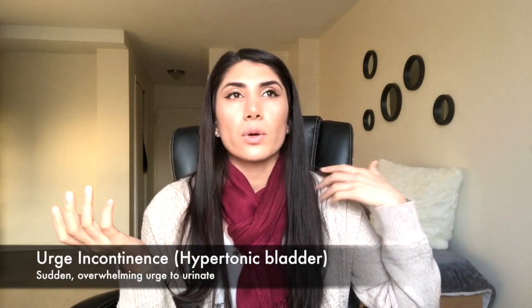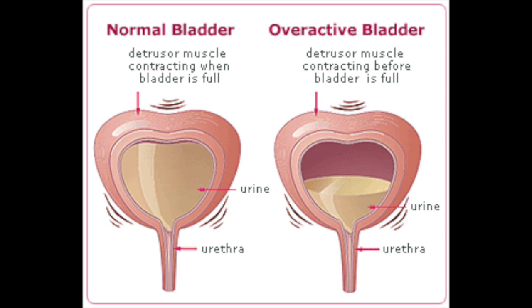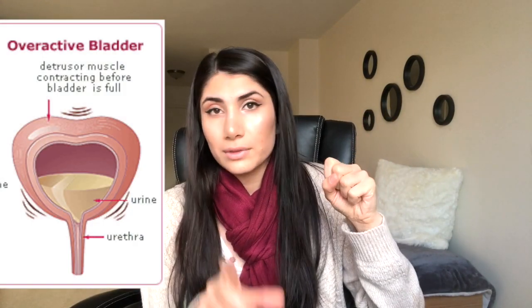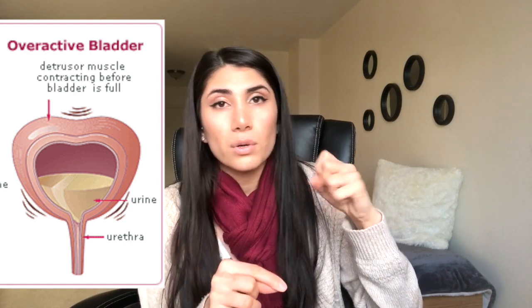Hypertonic bladder means you have a spastic bladder that's constantly being activated. Normally when you go to the bathroom, you relax the sphincter and then the bladder contracts. In urge incontinence, the contraction occurs on its own randomly — it just keeps happening. You can't hold it because the bladder contracts without your control, and the urine releases regardless of the sphincter.